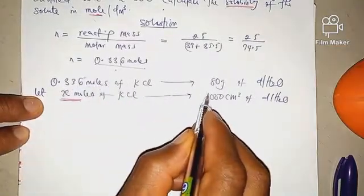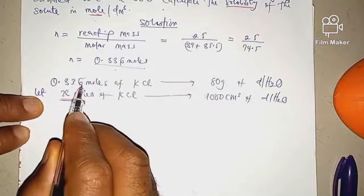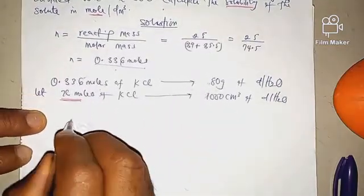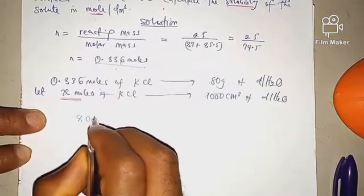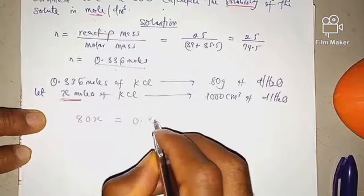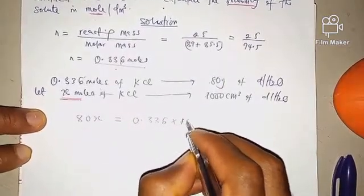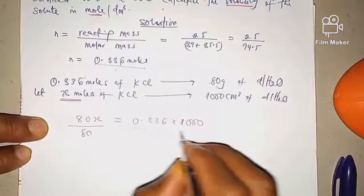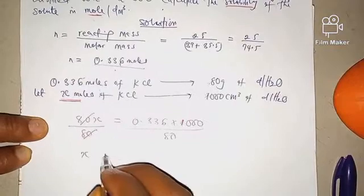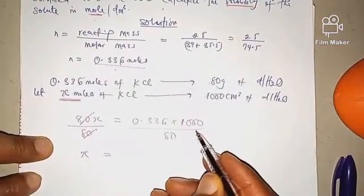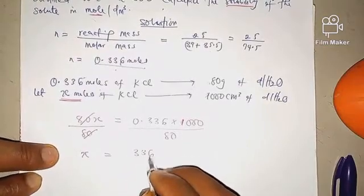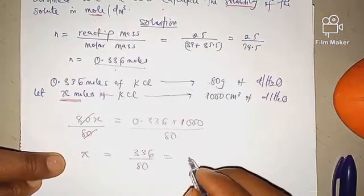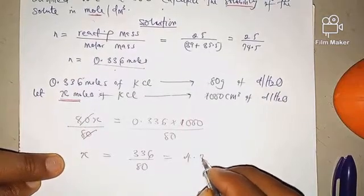We cross multiply: 0.336 multiplied by 1000, and x multiplied by 80. So we get 80x = 0.336 × 1000. Dividing both sides by 80, x = 336 over 80. When we divide that, we get approximately 4.2 moles.